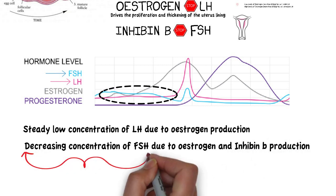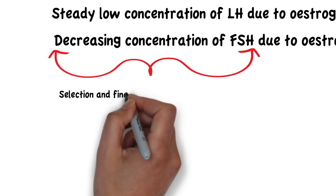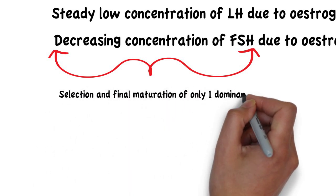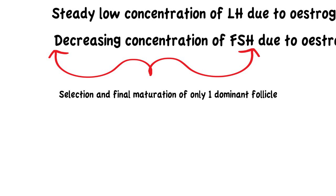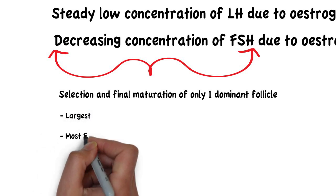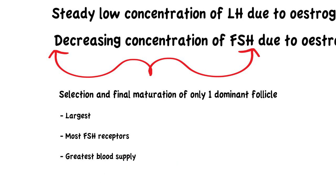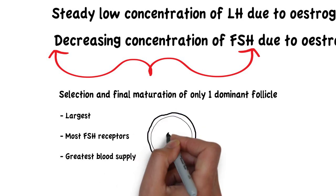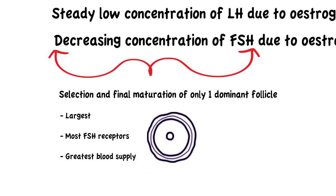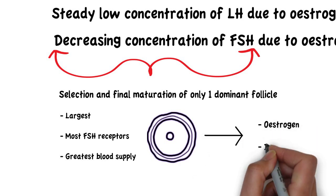The decrease in FSH leads to the selection and final maturation of only one dominant follicle. This is driven by the extreme dependency of follicles on follicle-stimulating hormone in the face of a declining FSH secretion. Usually, only the largest follicle with the most FSH receptors and greatest blood supply will survive. This follicle will continue to secrete increasing amounts of estrogen and inhibin-B.